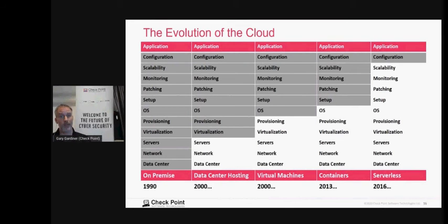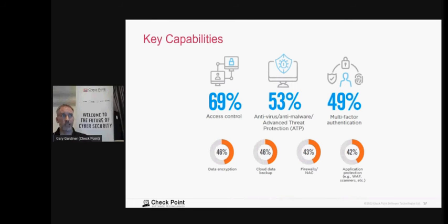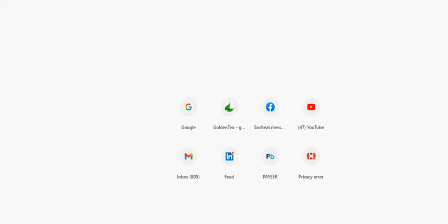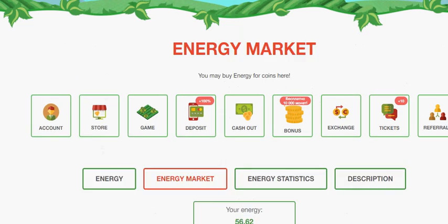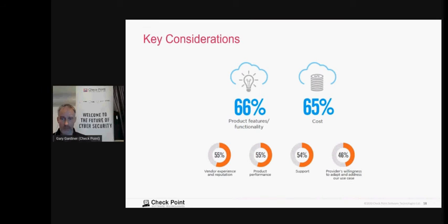When we asked about key capabilities people want in the cloud, they predominantly look for access control, anti-virus, anti-malware — what you'd expect in your data center — and multi-factor authentication. The key considerations when evaluating cloud security solutions are product features, cost, and vendor experience. Organizations recognize advantages of cloud-based security: faster time to deploy, cost effectiveness, and reduced effort around patching and software updates.